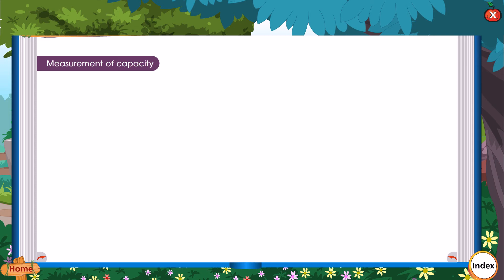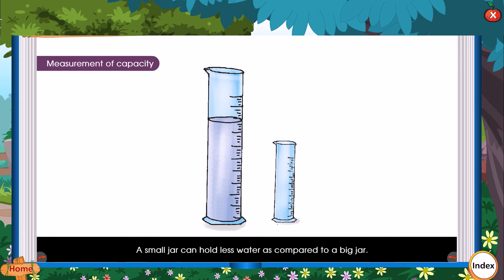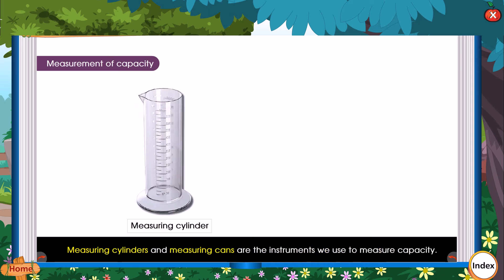Measurement of Capacity. The capacity of a container is the amount of liquid it can hold. You have seen jars of different sizes, haven't you? A small jar can hold less water compared to a big jar, so we say it has less capacity. The units to measure capacity are milliliters and liters. Measuring cylinders and measuring cans are the instruments we use to measure capacity.